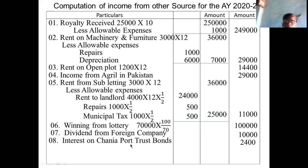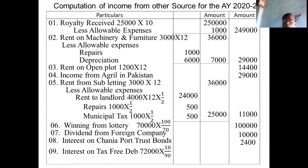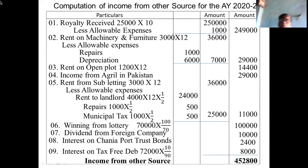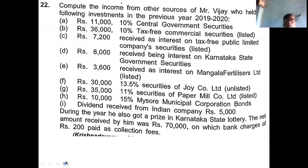Interest on Chennai 4% trust bonds: 2,400. Then interest on tax-free debenture: investment is 72,000 at 10%, tax-free, so gross up using 10 by 90, giving 8,000. Taking the total of all these values gives income from other sources: rupees 4,52,800.